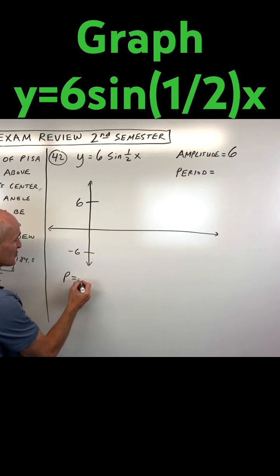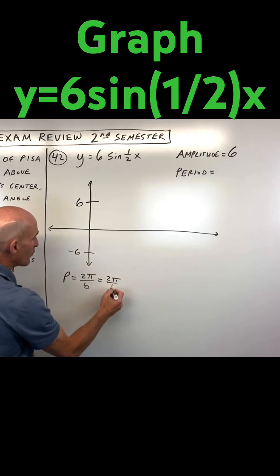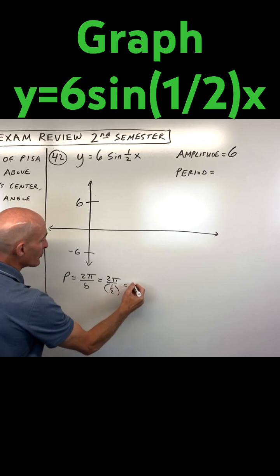If you want a formula, some students use this formula: 2π divided by b. And this is like your b value, so you'd say 2π divided by one-half. When you divide by a fraction, it's like multiplying by the reciprocal, so that's where we're getting our period of 4π.